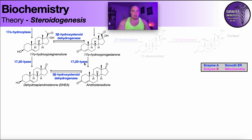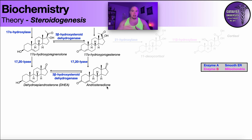The 17-20-lyase cleaves off a carbonyl group and oxidizes the hydroxyl group into a carbonyl, removing that short carbon chain. That is an irreversible reaction — once done, these two molecules can no longer be converted back to cholesterol. You are now committed to sex steroid synthesis with DHEA and androstenedione. You can interconvert between DHEA and androstenedione using 3-beta-hydroxysteroid dehydrogenase, which moves the double bond and creates a carbonyl.